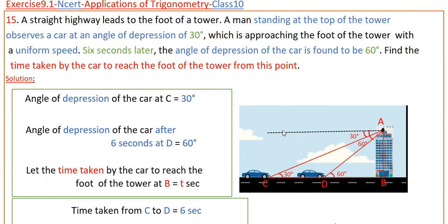These two lines are parallel lines, and if this is a transversal line, then these two angles are alternate interior angles, so these two angles are equal. So this is 30 degrees, and this is also 30 degrees. This is 60 degrees, so this is also 60 degrees.